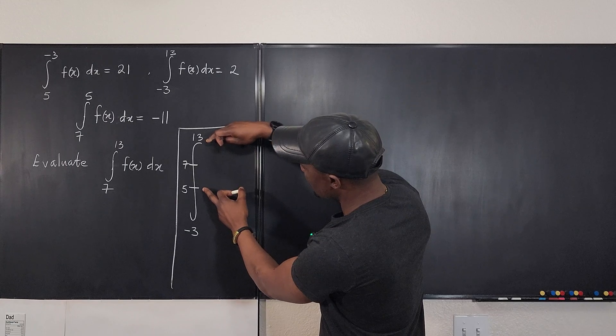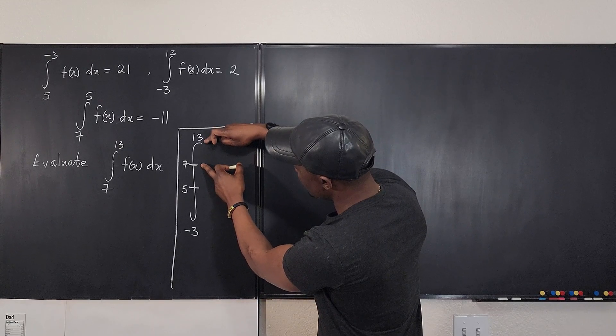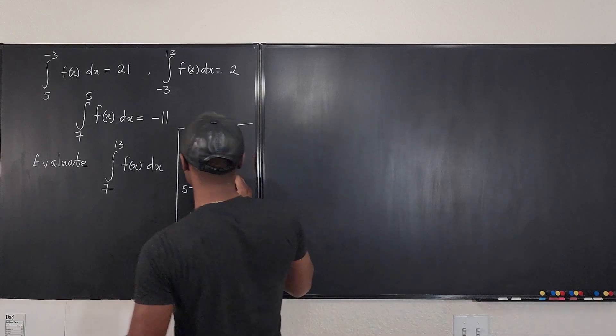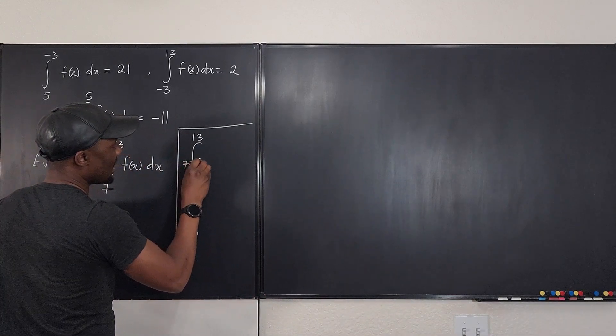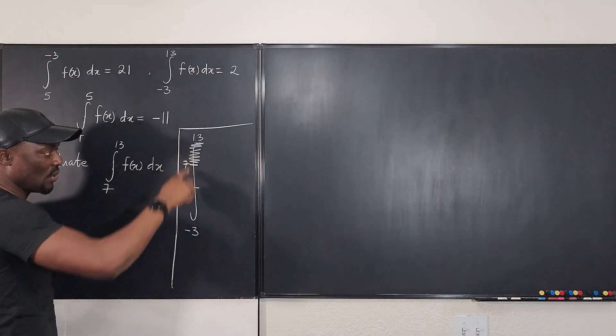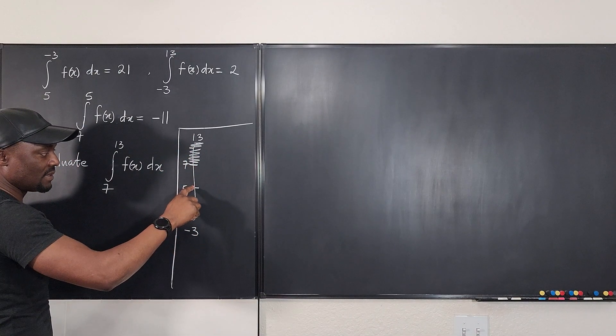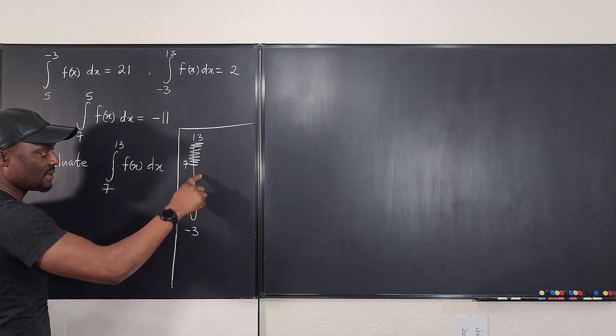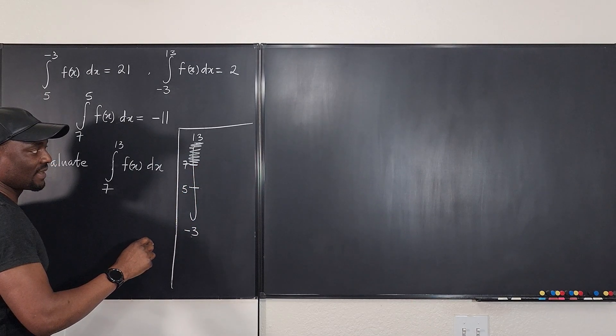Well, from 7 to 13 is basically... Oh! So this is what we're looking for. We're looking for this part. So it's basically the total minus this minus this. You see that?